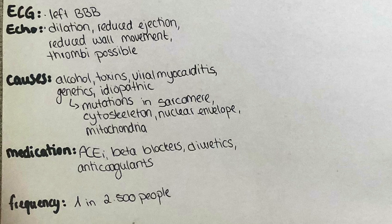Causes for this disease are prolonged alcohol abuse, different toxins, viral myocarditis, genetic predispositions due to different mutations, or it might be idiopathic. The mutations in genetic predisposition make up approximately one-third of cases and can affect the sarcomere — more specifically the actin filaments, the beta-myosin heavy chain, the alpha-tropomyosin, or the troponin T.